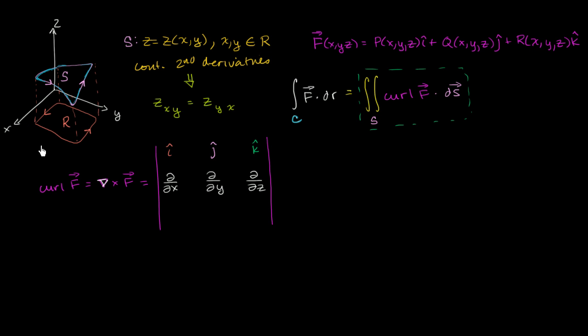And I will do that in green, well, I'll do it in blue. And so we have p, which is a function of x, y, z, q, which is a function of x, y, and z, and then r, which is a function of x, y, and z. And so this is going to evaluate as, it's going to be i, i times,